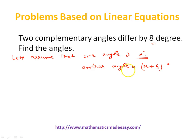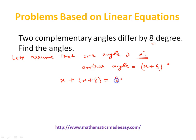So we have got two angles. Now, since they are complementary angles, the sum of complementary angles is 90 degrees. So the first angle plus the other angle — their sum should be 90 degrees. So let's solve this linear equation and find the value of x. This will become x plus (x plus 8) equals 90.